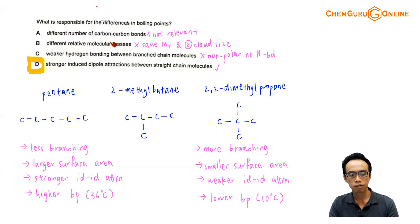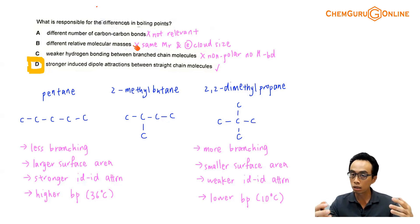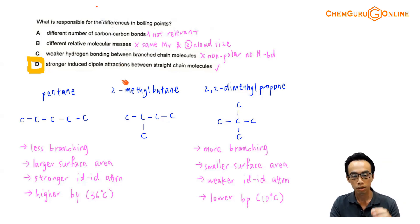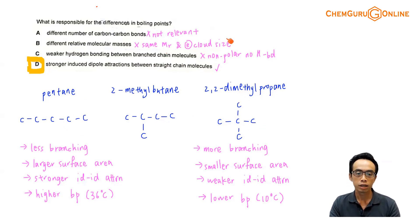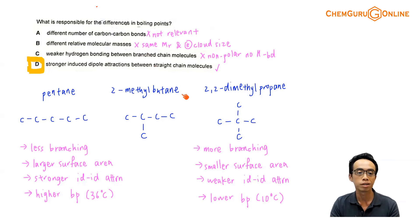Option B: different relative molecular masses. This does affect boiling points — a molecule with bigger MR will have a bigger electron cloud, which is more polarizable, and the ID-ID will be stronger. However, since pentane, 2-methylbutane, and 2,2-dimethylpropane have the same number of carbons, the MR will be the same and the electron cloud size will also be the same. So this factor doesn't apply for this particular comparison.